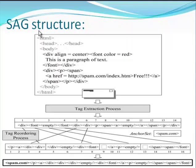This is the SAG structure. It is used in email abstraction generation. There are three phases in this SAG structure: the tag extraction phase, the tag reordering phase, and the appending phase.